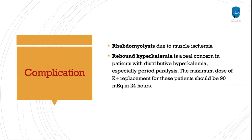Regarding complications: hypokalemia can produce rhabdomyolysis due to muscle ischemia. There is also a phenomenon called rebound hyperkalemia, which is a real concern in patients with distributive hypokalemia, especially in periodic paralysis. The maximum dose of potassium replacement for these patients should be 90 mEq in 24 hours. These patients usually present with hypokalemia, then after correction they enter rebound hyperkalemia. So with patients having a history of rebound hyperkalemia, be careful when correcting potassium.